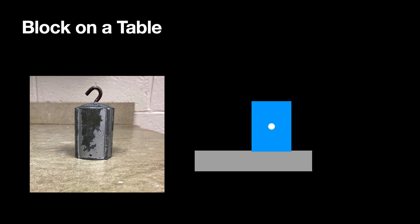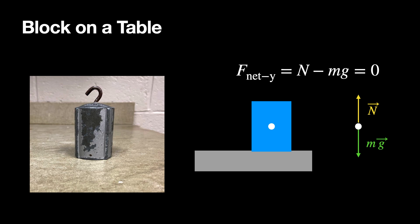Here we have a 500-gram weight sitting on a table, not moving. The forces acting on it: there's the downward gravitational force mg, and the table pushes up — I call that the normal force. Since the acceleration in the y direction is zero, the normal force pushing up has to equal the gravitational weight pulling down, so the normal force equals the gravitational force in magnitude.